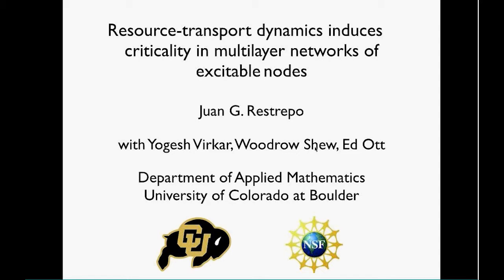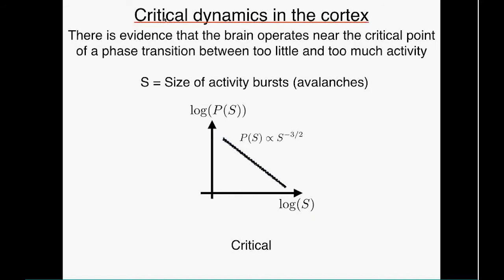We're interested in critical dynamics in excitable systems, and one of the main applications is in neural networks. There is evidence that the brain operates near the critical point of a phase transition between too little and too much activity. Researchers measure ongoing activity in cortical tissue, looking at activity bursts called neuronal avalanches, and examine the distribution of their sizes.